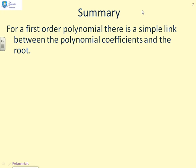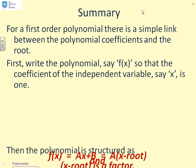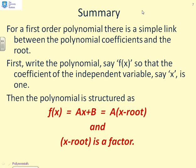So in summary, for a first-order polynomial, there's a simple link between the polynomial coefficients and the root. If you write the polynomial f(x) so the coefficient of the independent variable x is 1, then the polynomial is structured with the following form. Ax plus B can be written as A into brackets (x minus root). And (x minus root) is the factor in the most convenient form.